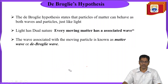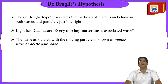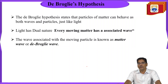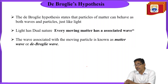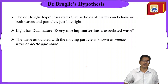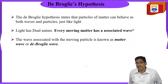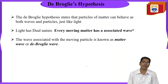De Broglie's hypothesis explains wave-particle duality: he stated that light has dual nature and that every moving matter has some associated wave. Particles of matter can behave as both waves and particles just like light. The wave associated with a moving particle is known as a matter wave or de Broglie wave.